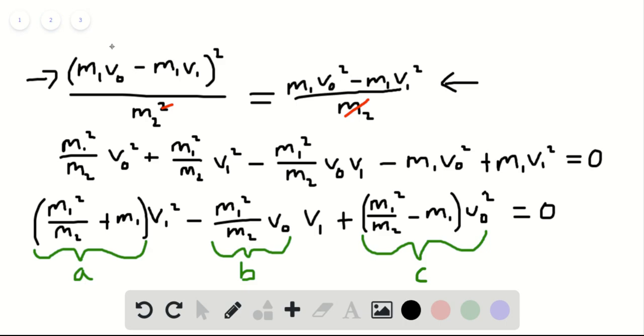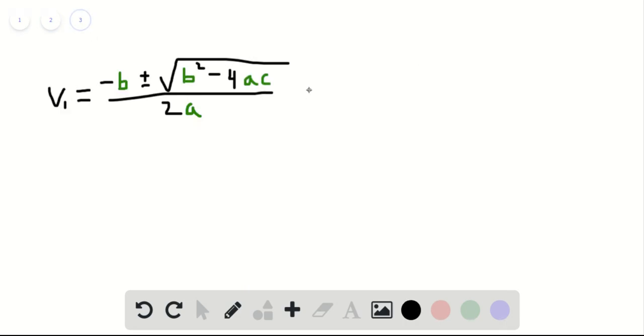So carrying this out, we find that V1, and after a little bit of simplification, it can get a little tedious but if you stick with it it works. We find that this is indeed equal to M1 minus M2 times V0 divided by M1 plus M2.